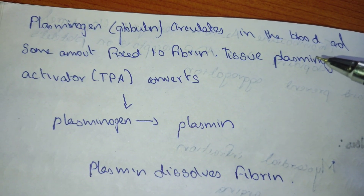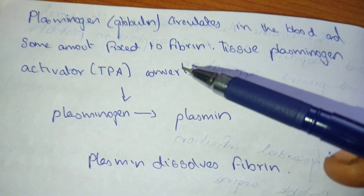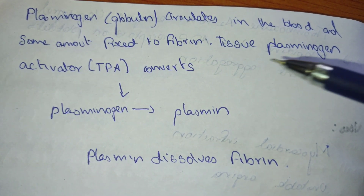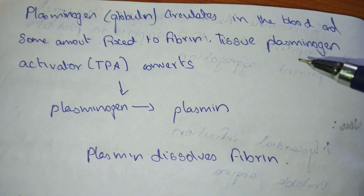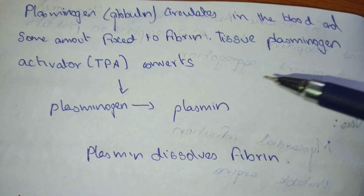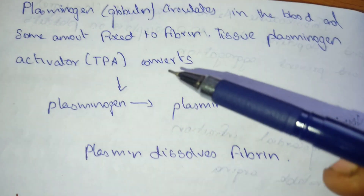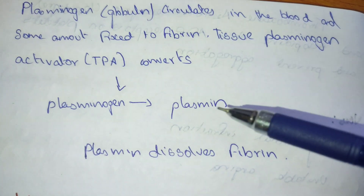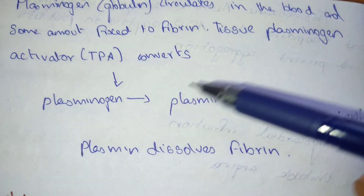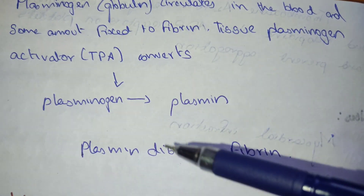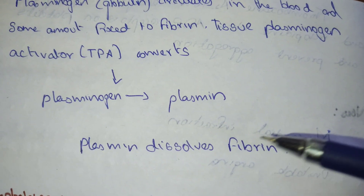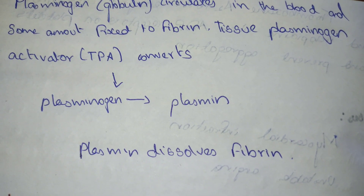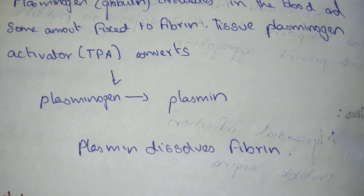Plasminogen, which is a globulin, circulates in the blood — some amount is fixed to the fibrin. The tissue plasminogen activator, which is tPA, converts plasminogen to plasmin. This plasmin dissolves the fibrin, so the clot is broken down — this is fibrinolysis.